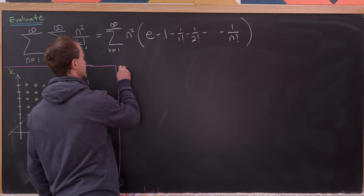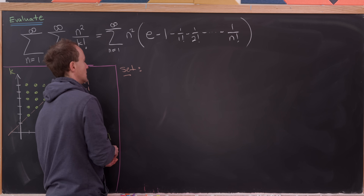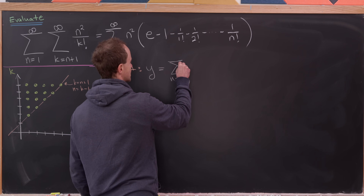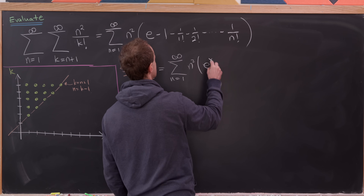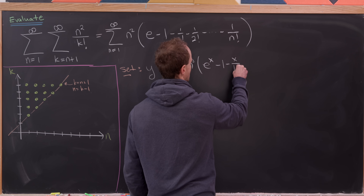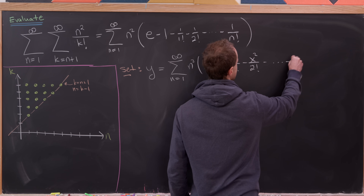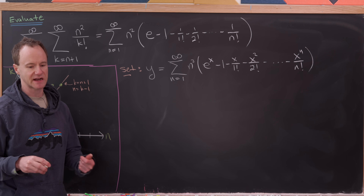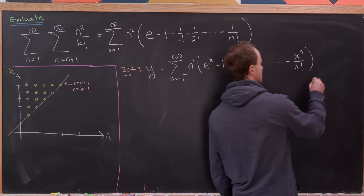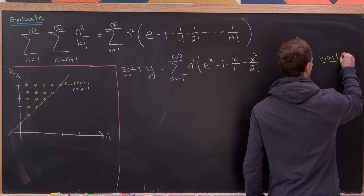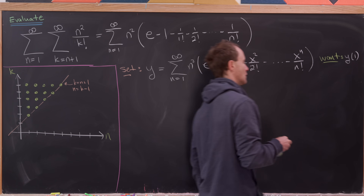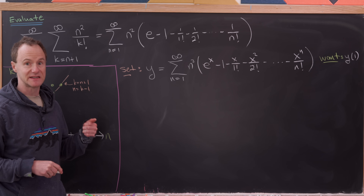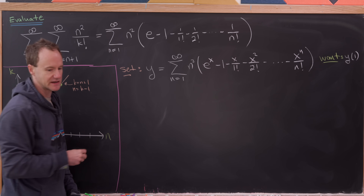From here, let's introduce a function. Let y be a function of x defined as the sum as n goes from 1 to infinity of n squared times the quantity e to the x minus 1 minus x over 1 factorial minus x squared over 2 factorial, all the way down to x to the n over n factorial. This is the difference between e to the x and one of its Taylor polynomials. Under this setup, what we want is y evaluated at 1, and we'll find it by solving a differential equation that y satisfies.